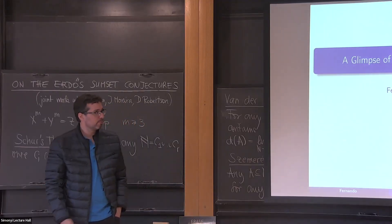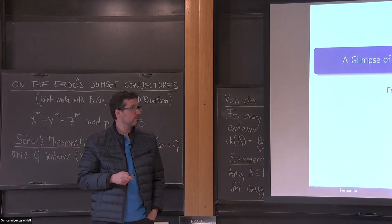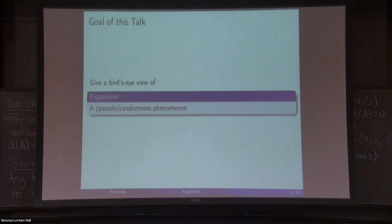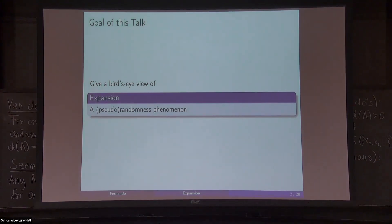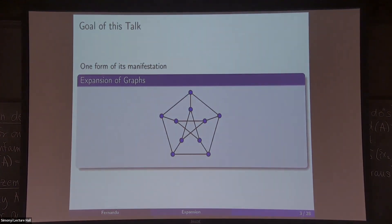Thank you very much, thank you for coming everyone. So the goal is to talk a little bit about expansion. Very broadly speaking, expansion is some form of randomness or pseudo-randomness, and there is a very particular manifestation that's very important for us in the expander graphs, the expansion of graphs.